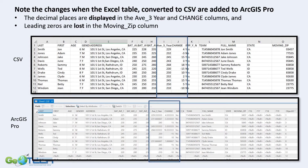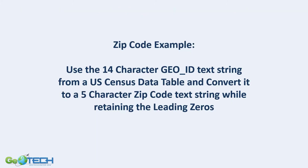The leading zero is lost again. Moving zip was there in the CSV file, but now it's disappeared. We need to replace that leading zero. We're going to look at an example using U.S. Census data tables, which has a 14-character GeoID text string, and we're going to convert it to a 5-character ZIP code text string and have it retain those initial leading zeros.